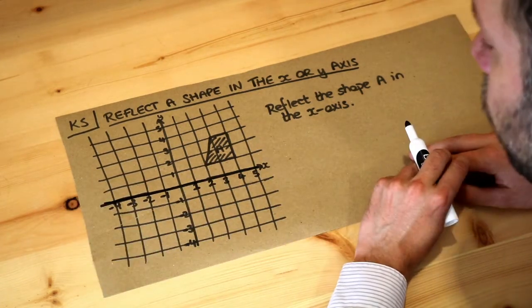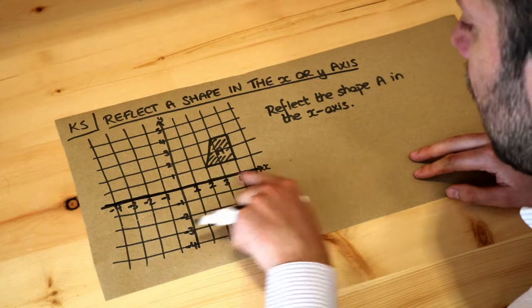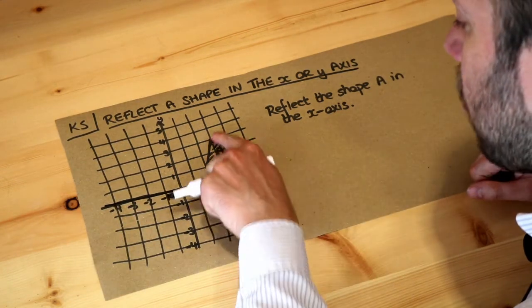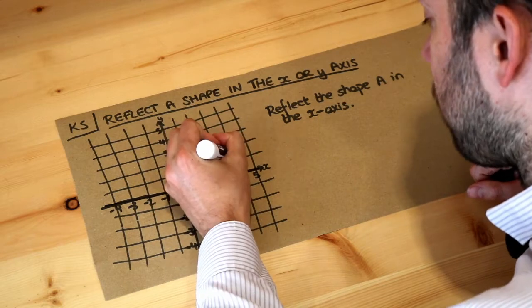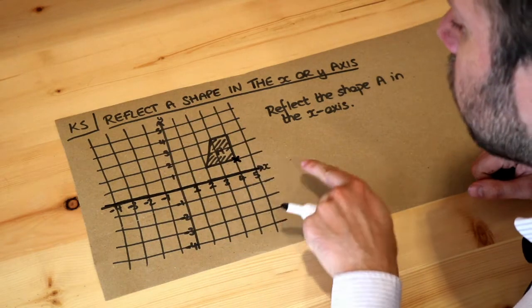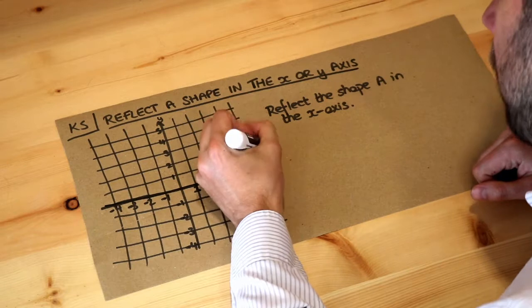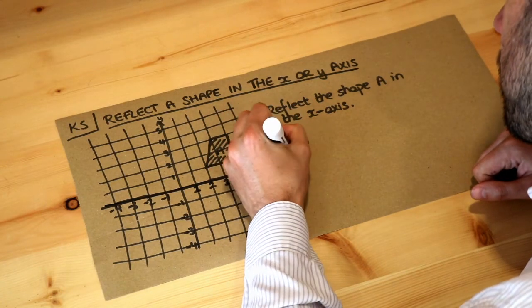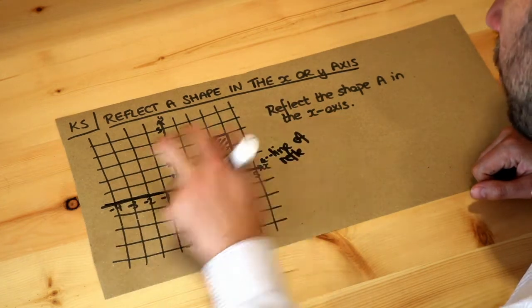In the previous video we saw how we could reflect a shape in a horizontal or vertical line. And all we do is we take each point on this shape. So let's say this corner here and then we go directly towards this line of reflection. So this is the line of reflection here on the X axis which is the line we want.